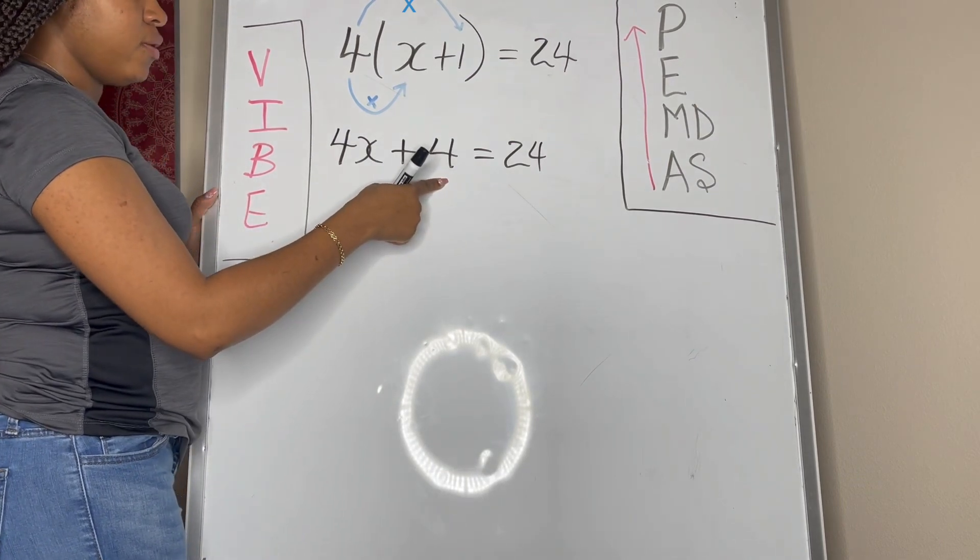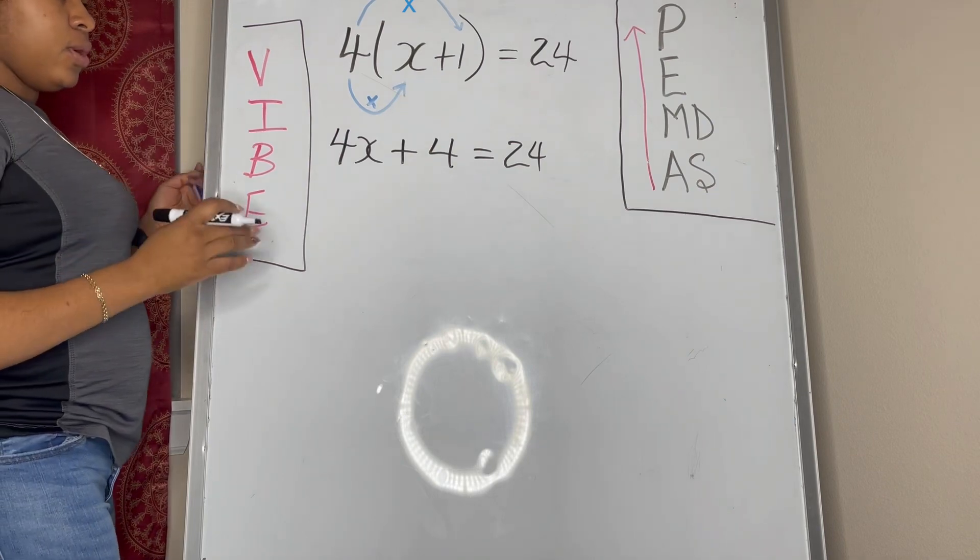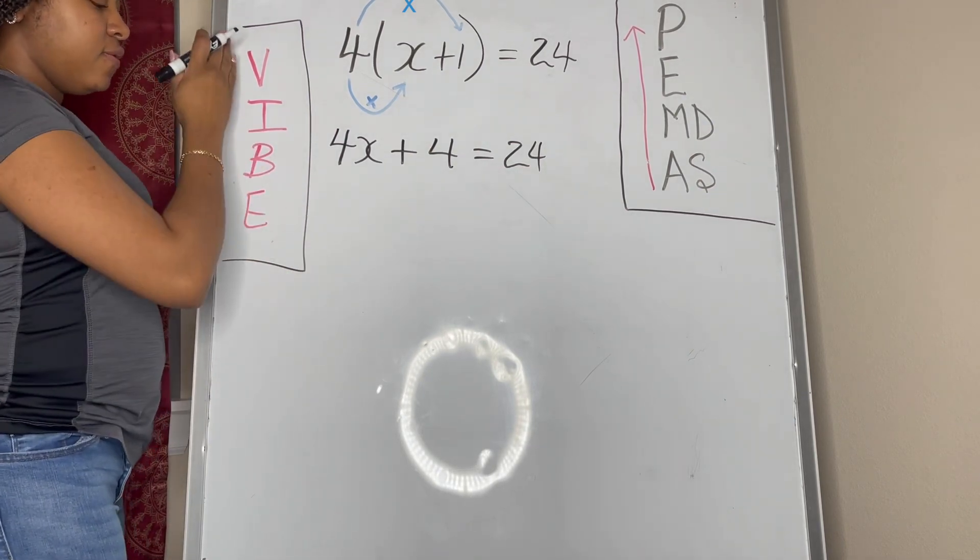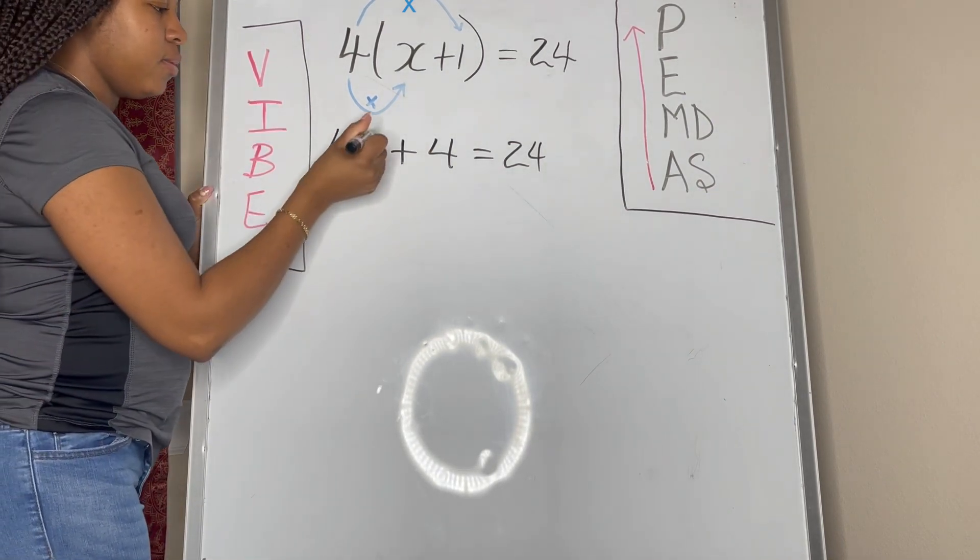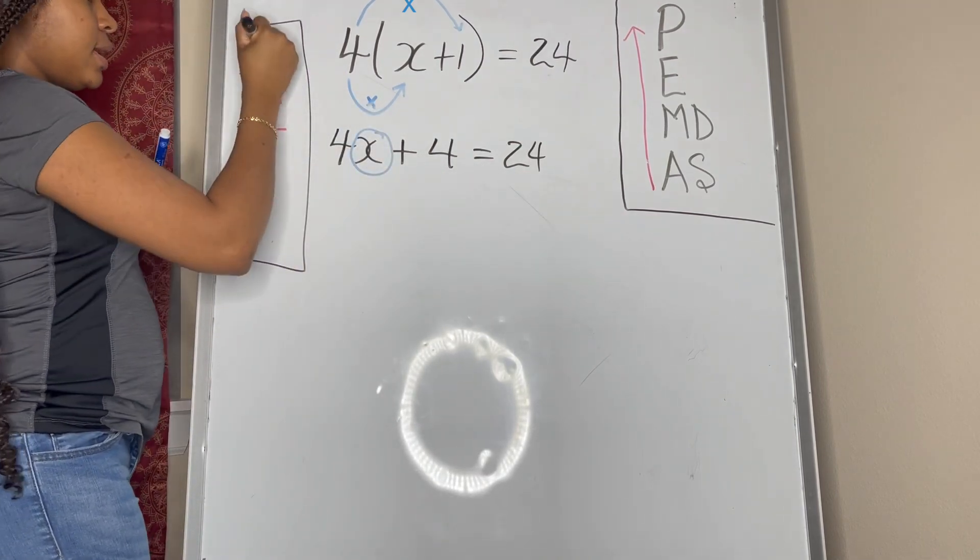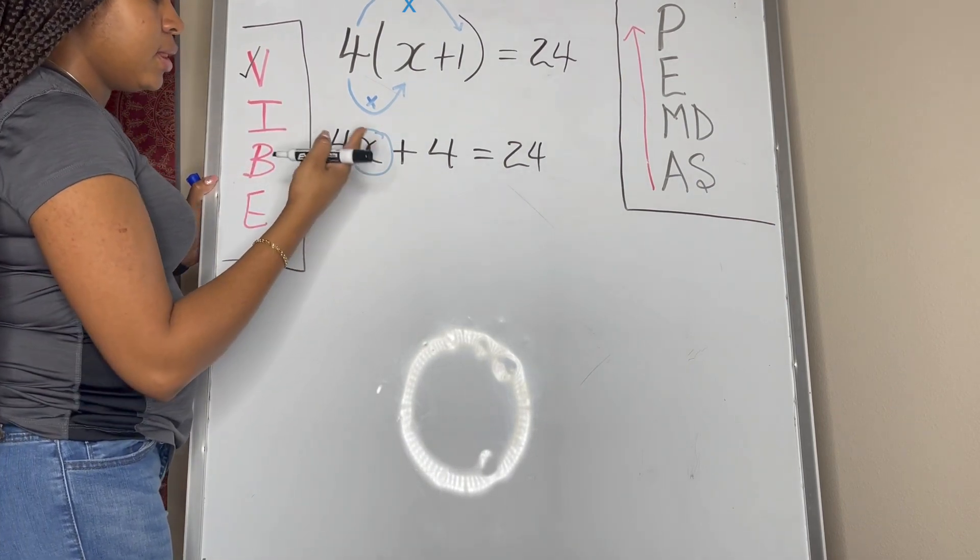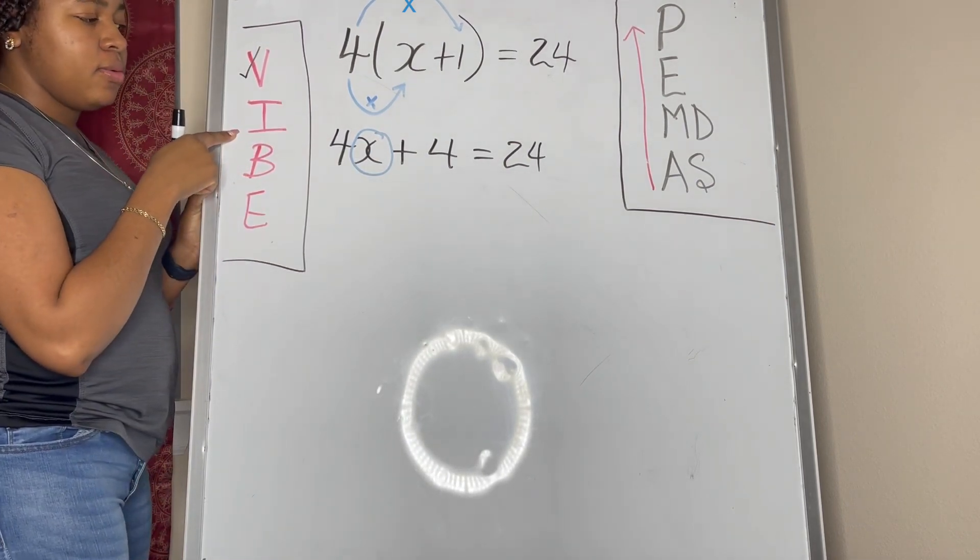So we know that we're going to do our addition or subtraction first, so we're going to get rid of the plus four part first. But let's not skip any steps, let's work through it following VIBE. So we find our variable first, and that's what we have right here, we have our x.